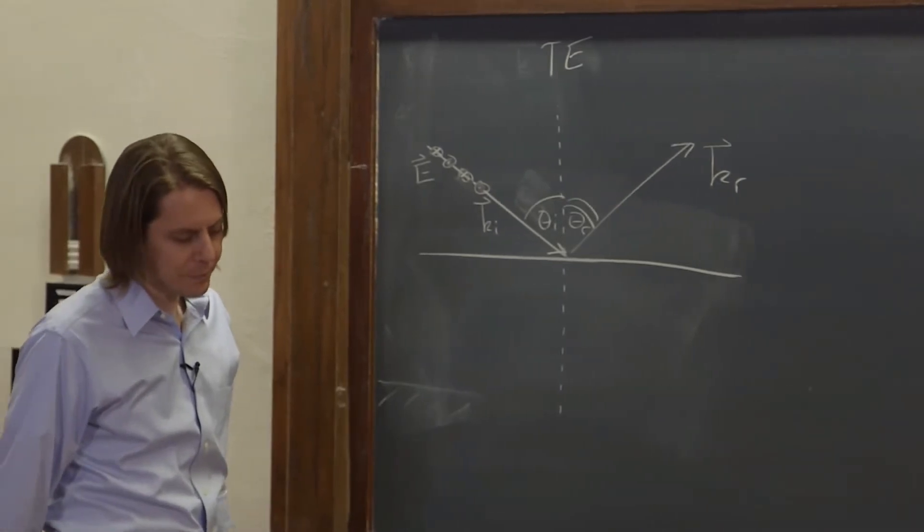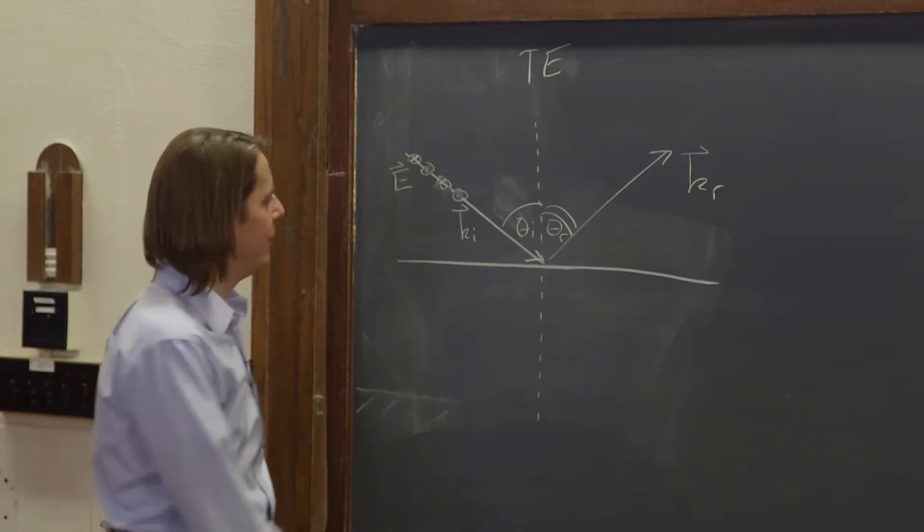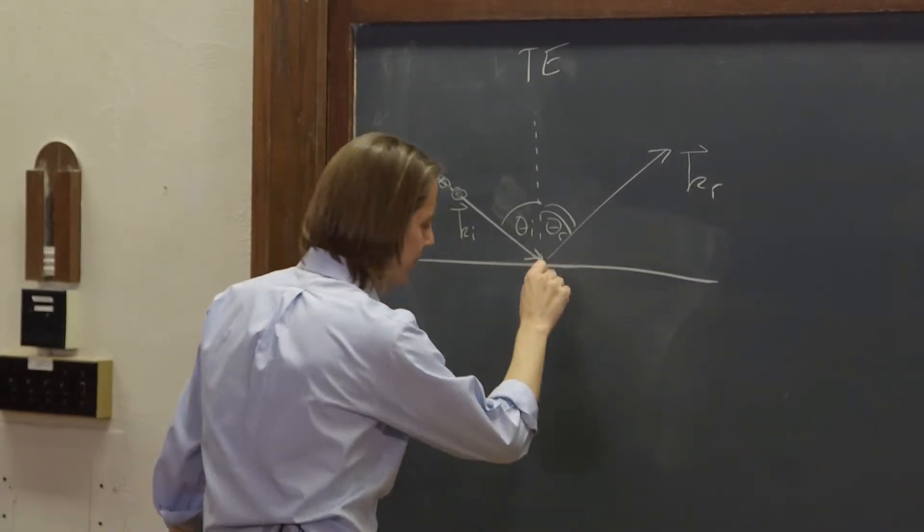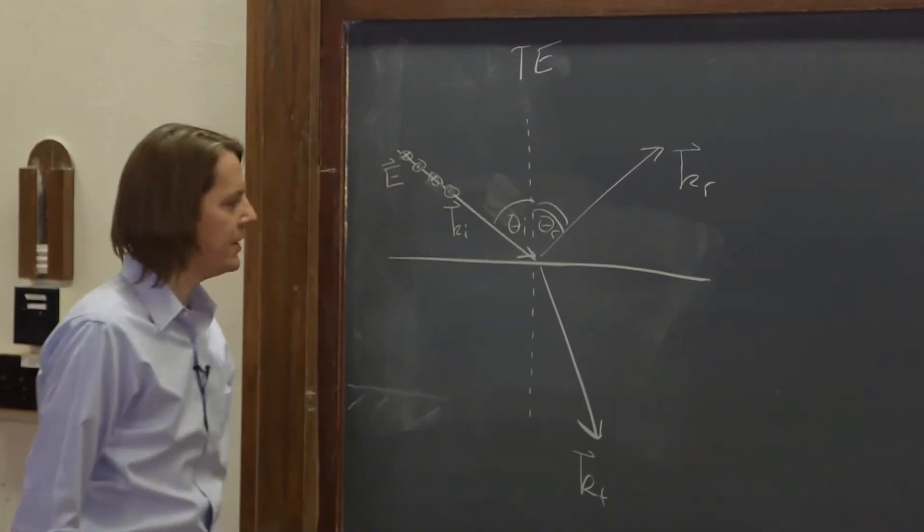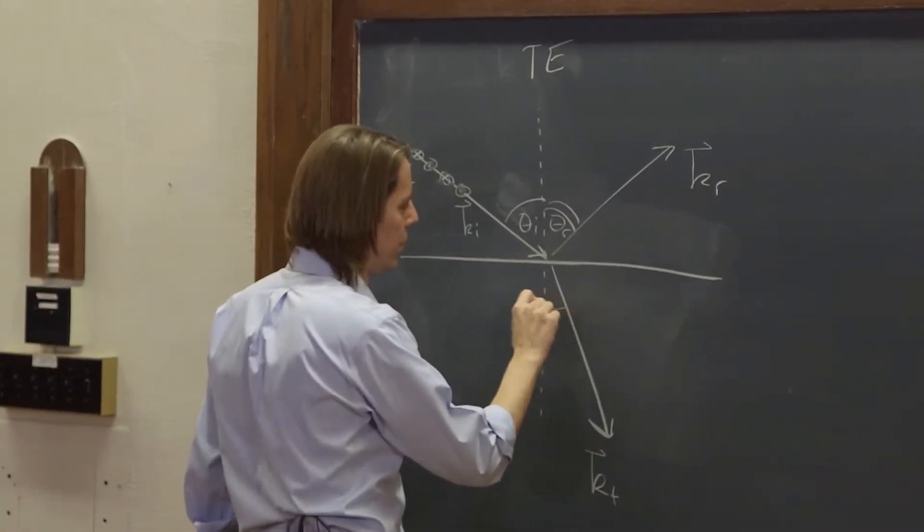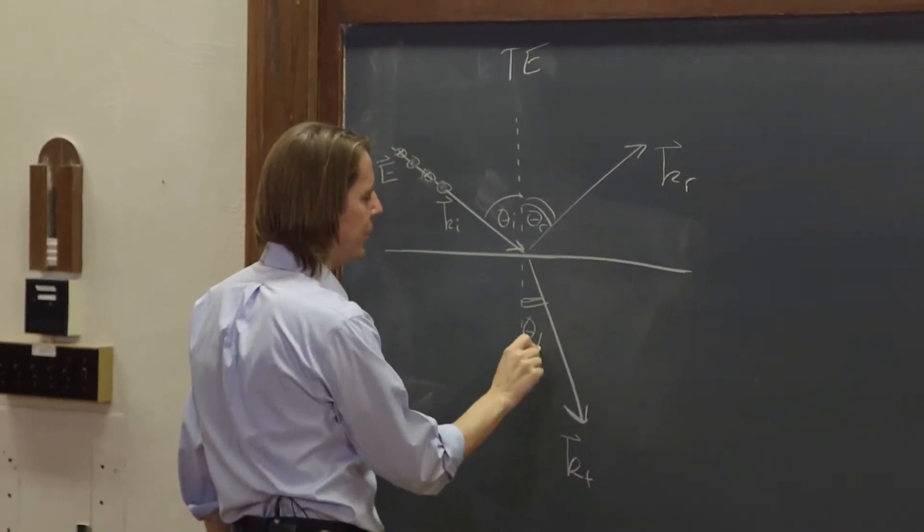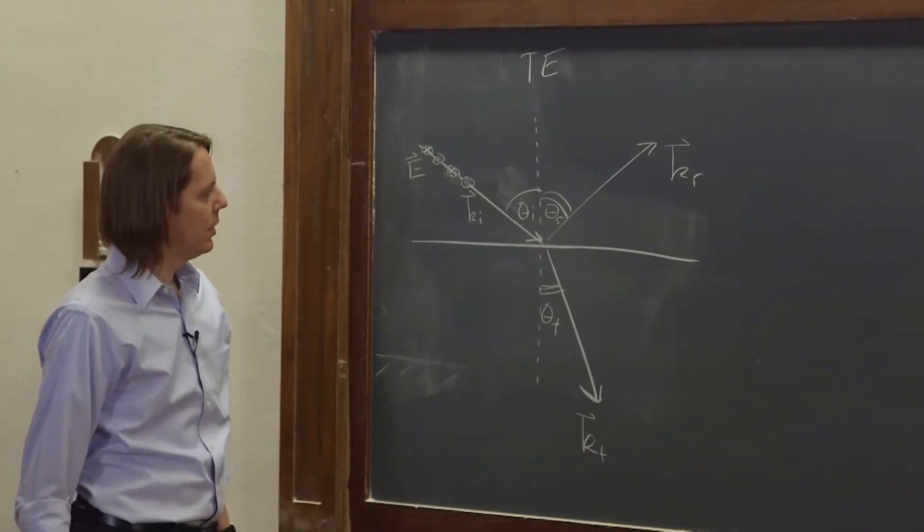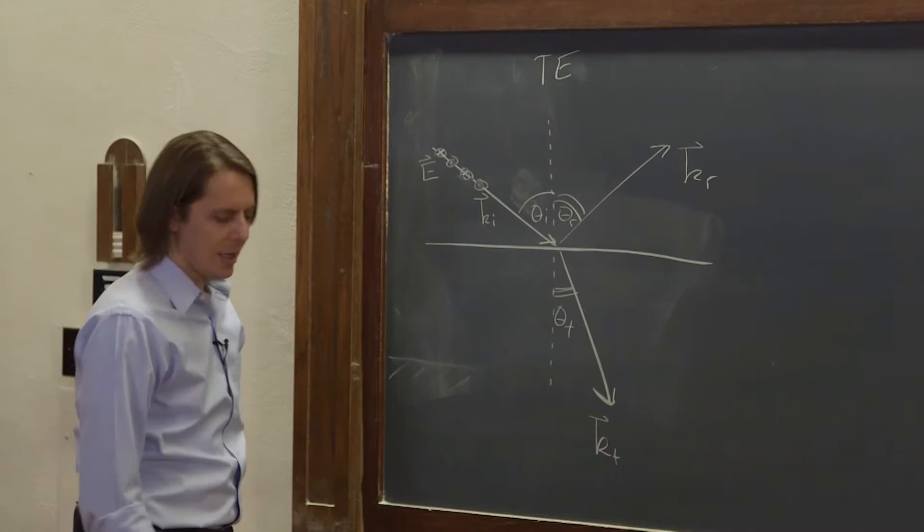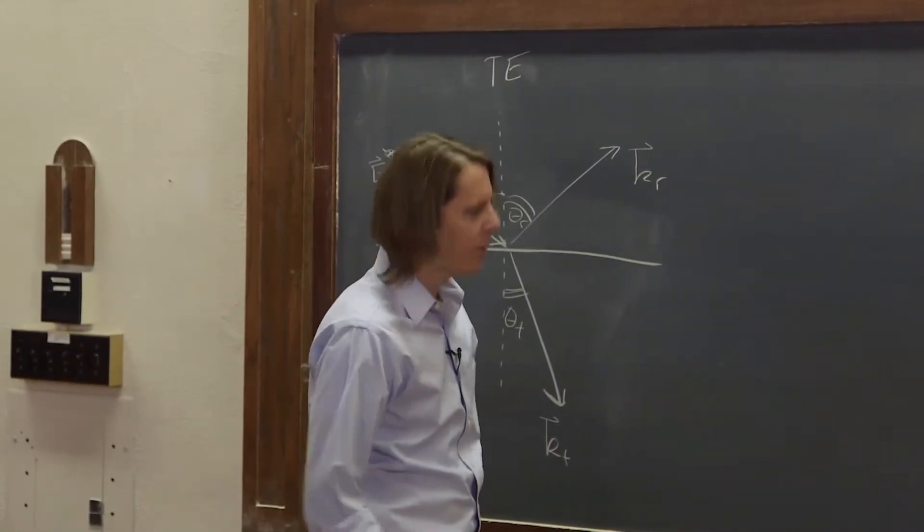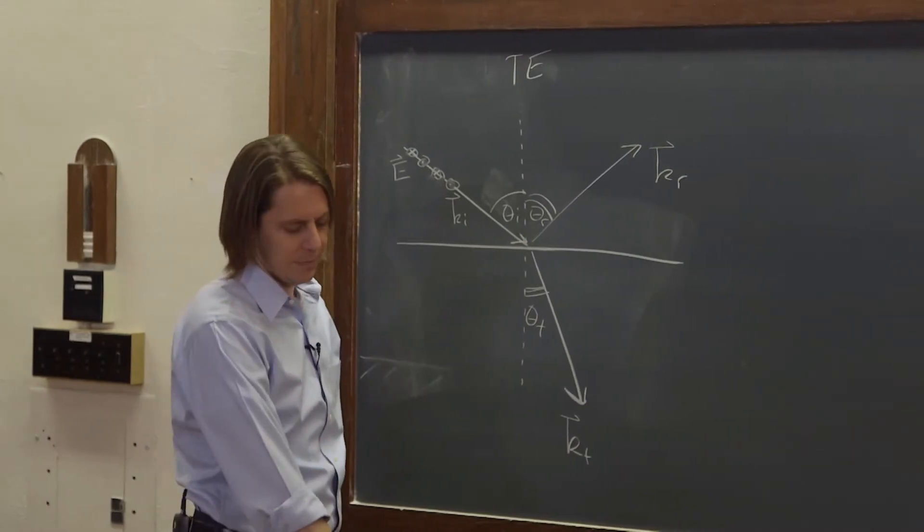So two things might happen, or will happen, might happen to the light is it might reflect and go off this way. That would be Kr, the reflected wave vector. It would have its own angle, theta-R maybe, like that. And we could draw field vectors on it, but let's not, just to keep it not so messy. And then some of the light might go into the medium, like this. And that will have its own wave vector, Kt. And the angle we define is also with respect to the normal. And that would be at the angle theta-T. So that captures everything we need.